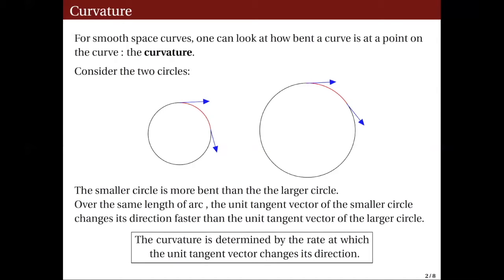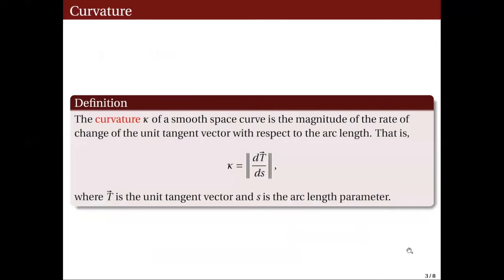We can see that the tangent vector to the arc on the smaller circle changes its direction faster than that of the tangent vector to the larger circle. That justifies our conclusion that the smaller circle is more bent than the larger circle. Moreover, we can say that curvature is actually determined by the rate at which the unit tangent vector changes its direction. Hence, we can now define mathematically the curvature function. We denote the curvature function by the letter kappa.